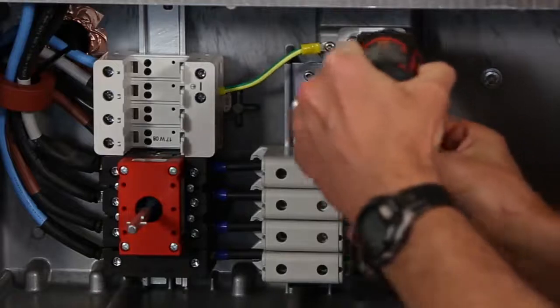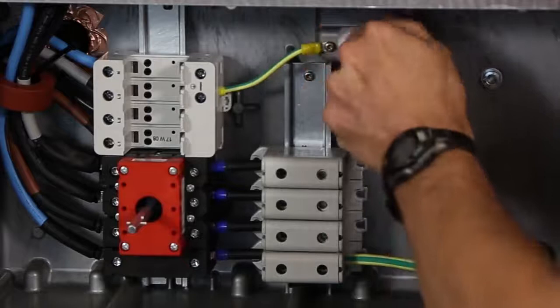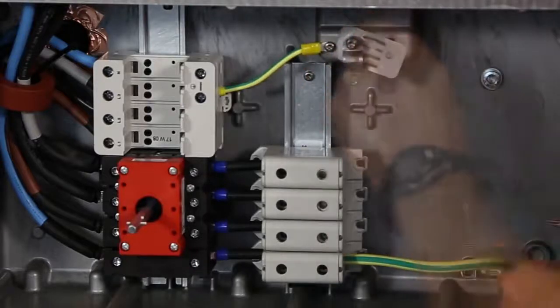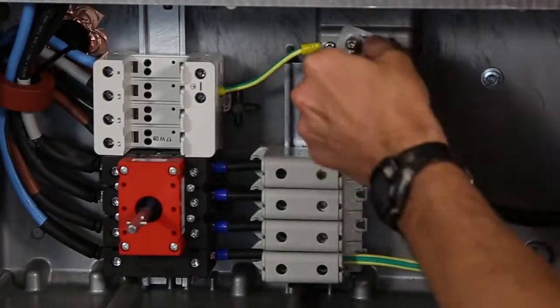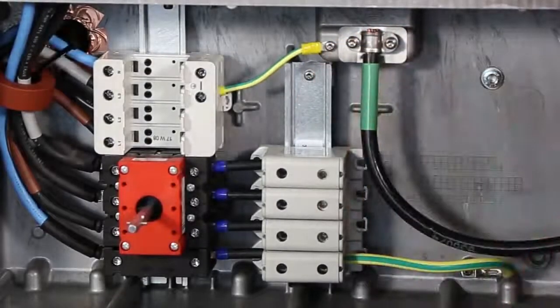First we proceed to the installation of the AC wires. For this process we will need both a Torx 30 and a Torx 25 screwdriver. First, bring the equipment ground conductor and attach it to the PE grounding point just above the AC wiring block using the Torx 25 screwdriver to secure the clamp.